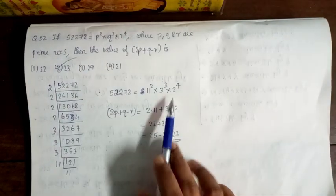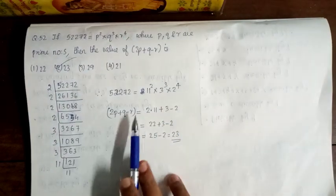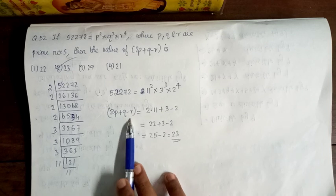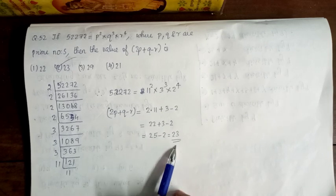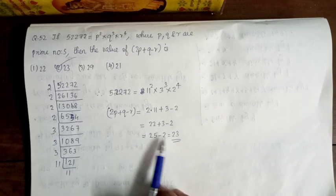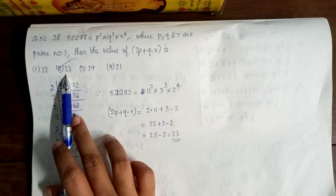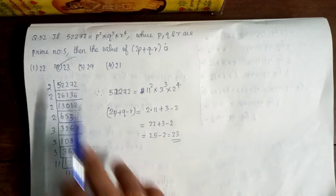So P equals 11, Q equals 3, R equals 2. Substituting: 2P plus Q minus R gives the value 23. So option 2 is correct.